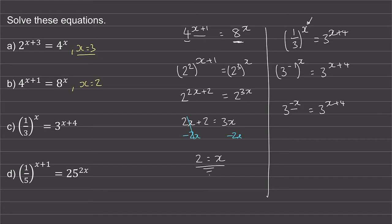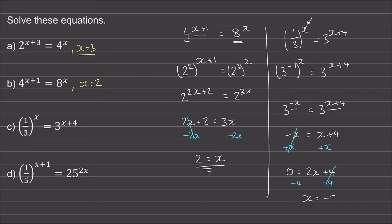We can equate the two powers. So negative x is equal to x plus 4. We can add x to both sides — these will cancel — so we have 0 is equal to 2x plus 4. We'll take away 4 from both sides, and these will cancel, so we're left with x is equal to negative 2.